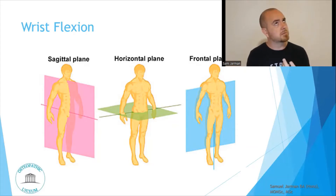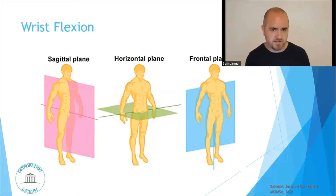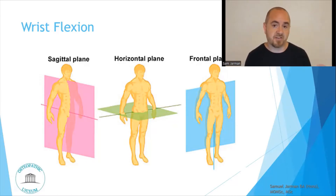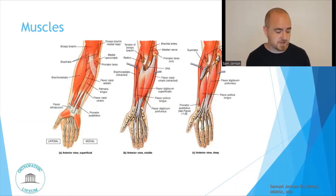The speaker notes a possible error — it may be the carpals in relation to the radius rather than the ulna, since the radius is generally the larger bone at the inferior aspect. This kind of mistake is actually useful as it prompts the learner to verify the information independently. Either way, wrist flexion is movement of the palm towards the front of the body in the sagittal plane on the transverse axis.